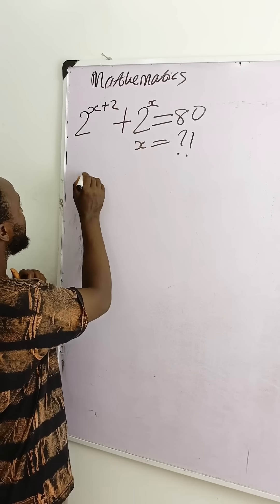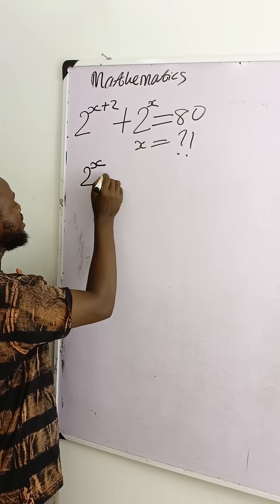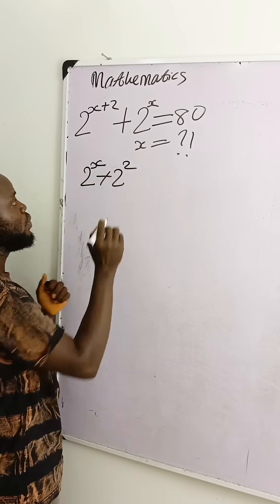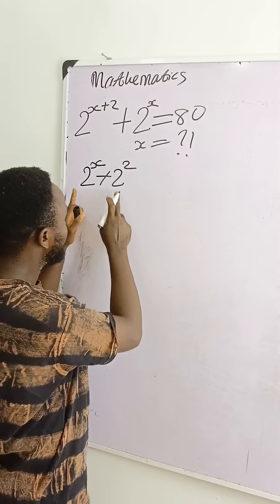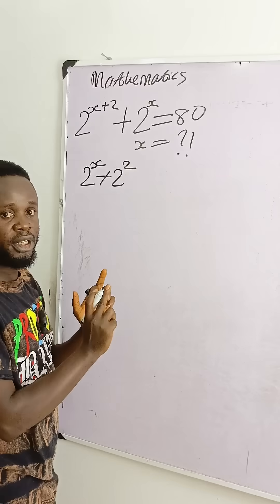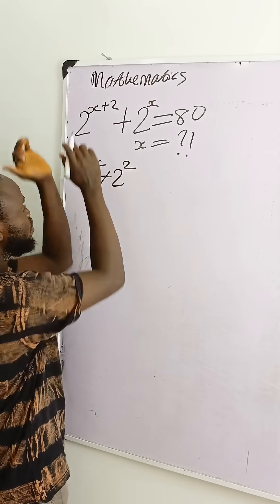This 2 raised to power x plus 2 is equal to 2 raised to power x times 2 raised to power 2. The same thing. Why? The same basis, multiplication, add exponents, gives you back this one.